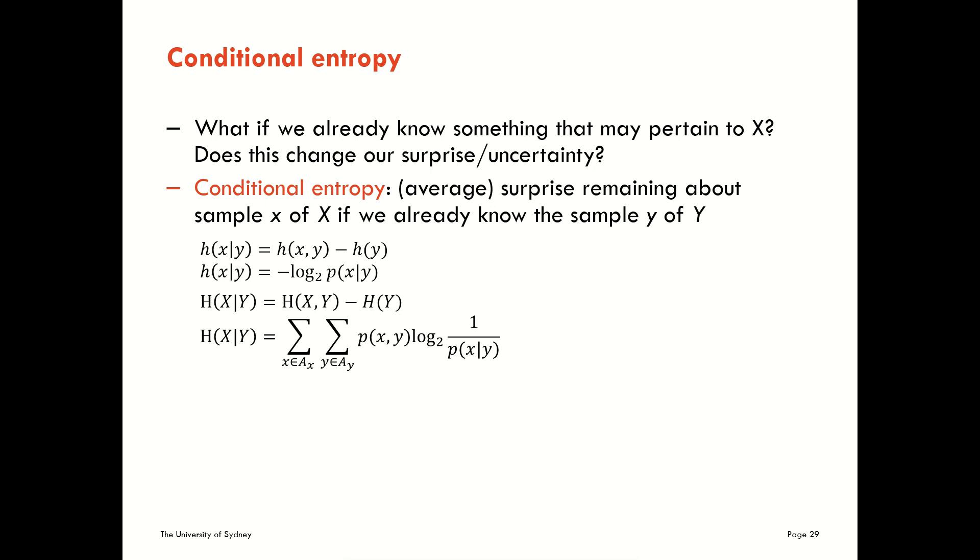How can we quantify the uncertainty that's left in variable X given what we already know? This is where the conditional entropy comes in.